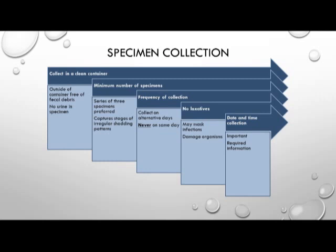When collecting the specimen for parasitology, it's important to collect in a clean container, free of fecal debris on the outside, and not contaminated with other debris or urine. The minimum number of samples should be a series of three, which would capture any irregular shedding patterns. The frequency of collections should be performed on alternate days and never on the same day. It's important to inform the patient not to be on any laxatives, as this may mask an infection and possibly damage the organism. Also remember to date and time the collection container.